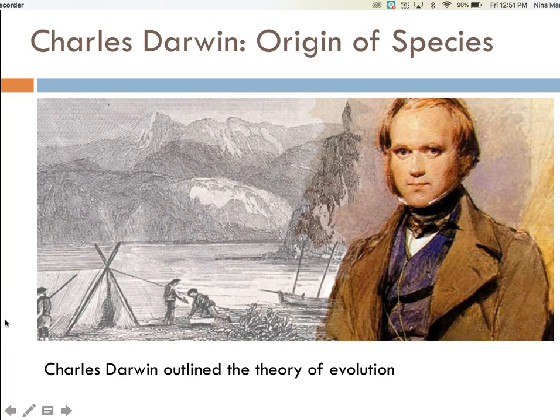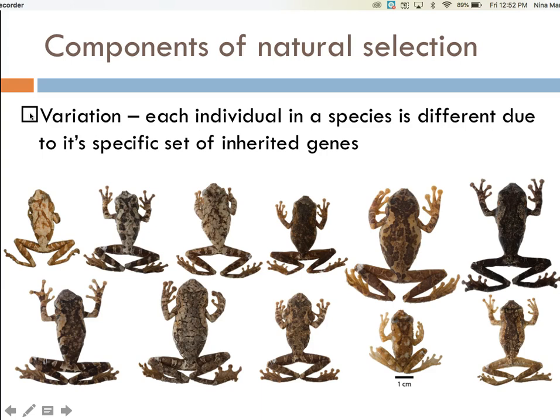Charles Darwin proposed the theory of evolution in his book, The Origin of Species. One aspect of natural selection, as outlined by Darwin, is that in order for evolution to take place, there must be variation within a population of a particular species. Variation means that each individual within a species is slightly different from other individuals due to its specific set of inherited genes. When you look at this population of frogs, you can see how each individual is slightly different from the others. These differences are due to individual different genes.